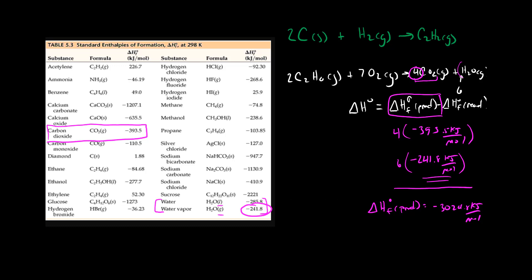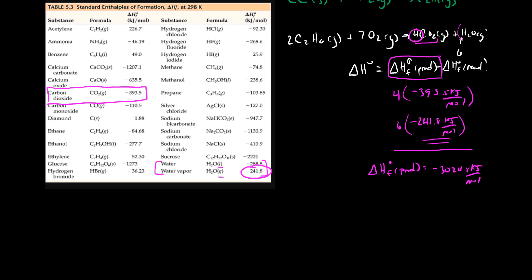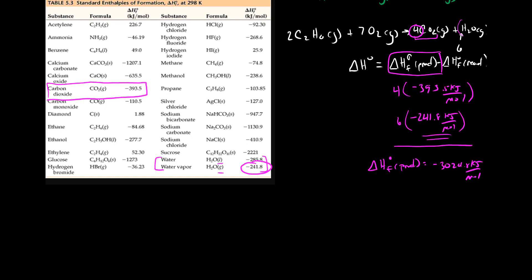We want to do the same thing for our reactants. Okay so I'll scroll down here. And for our reactants here we have two C2H6 and from our table, let me choose a color you can see.